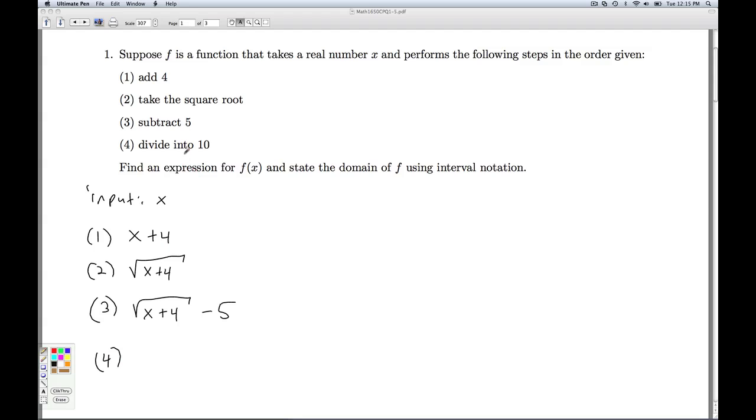And then the last step, we're supposed to divide our result into 10. So let's remember how this works. If I want to divide 2 into 10, that's the same as writing 10 divided by 2. And so we would have 10 divided by this. So the formula we're looking at here, f of x is equal to 10 divided by square root of x plus 4 minus 5. So this is the guy we're looking at. Now it's time to find its domain.